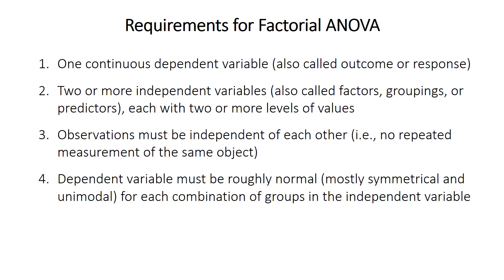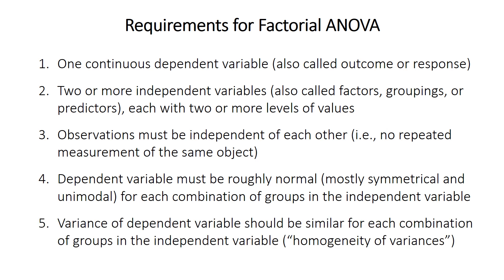Fourth, the dependent variable must be roughly normally distributed — more or less symmetrical and unimodal for each combination of groups. The test isn't that sensitive to this unless there's a good amount of skew. And fifth, the variance of the dependent variable should be roughly similar for each combination of groups, which is generally called homogeneity of variances. Also note that sample sizes are quite important, but there'll be much more on that later.